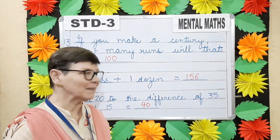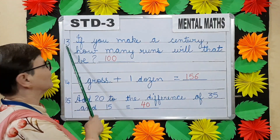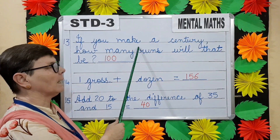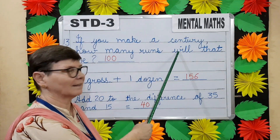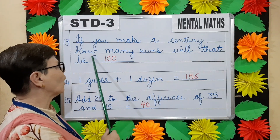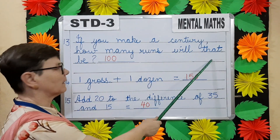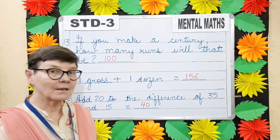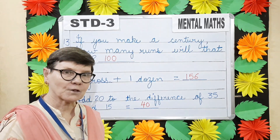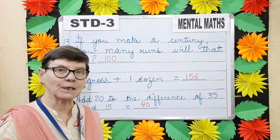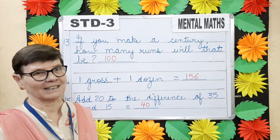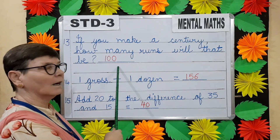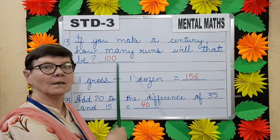Question number thirteen. If you make a century, how many runs will that be? A century children — how many units? Hundred. So you will make one hundred runs.